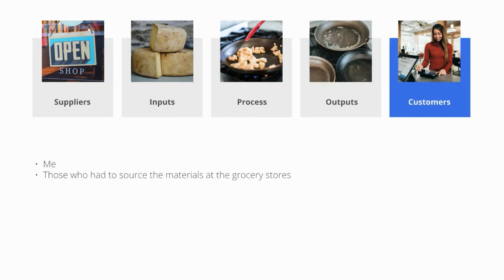Finally, the customer is the final element to the SIPOC diagram. This can be those who purchased elements from the SIPOC. Don't forget to include workers who had to purchase the raw materials, inputs, to make your process function. In this case, our customers are myself, who consumed the grilled cheese, and those who had to source the materials at the grocery stores.